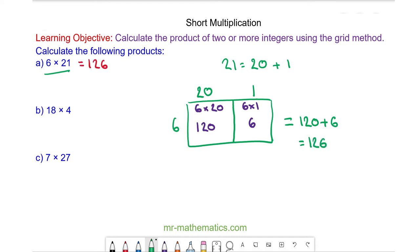For question b I'm going to write 18 as 10 plus 8. So I have 4 on this side with the 10 and the 8.